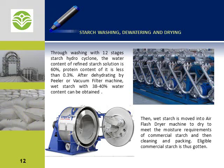Now it is time to process the extracted starch. Starch washing, dehydration, and drying. Separated starch from gluten needs to be washed using a hydrocyclone washing system in order to remove impurities including protein and fiber. Refined starch is then dehydrated using a centrifugal peeler or a vacuum drum filter machine, and is sent to a starch flash dryer for drying to the required moisture before packing.